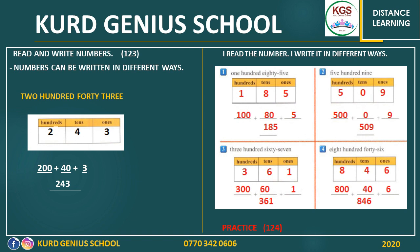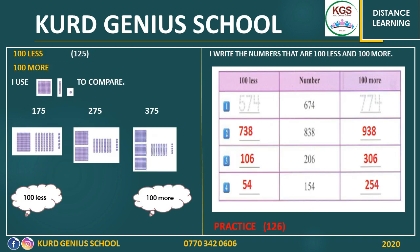Let's go to page 125 and talk about 100 less and 100 more. I use hundreds, tens, and ones to compare. I have this number — for example, the number is 275. I want you to tell me a number which is 100 less than 275. 100 less than 200 is 100, so the number is 175.